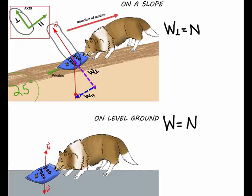On level ground, the normal force equals the weight, but here on the slope, the normal force is less than on level ground, which also allows the maximum static friction to be less.